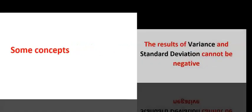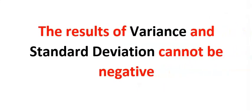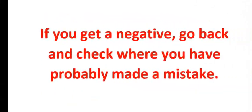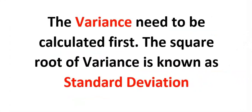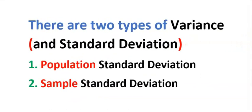Before we solve this problem, let's understand some important concepts. First, the result of variance and standard deviation cannot be negative — if you get a negative, go back and check where you made a mistake. Next, variance must be calculated before standard deviation, since the square root of variance is standard deviation. Third, there are two types of variance.